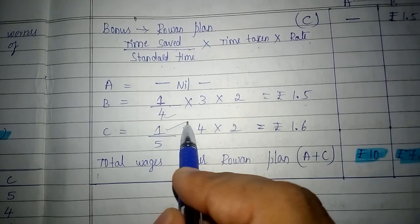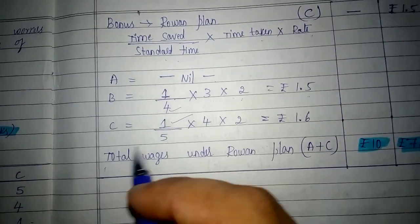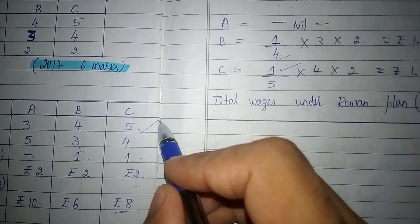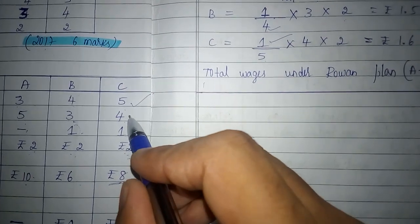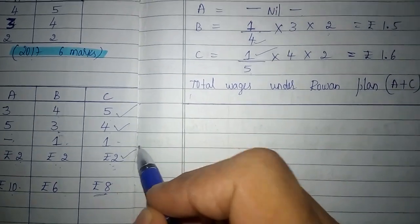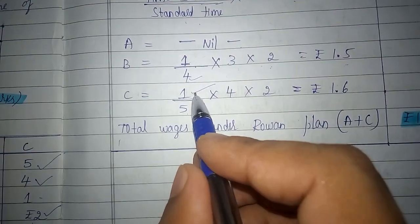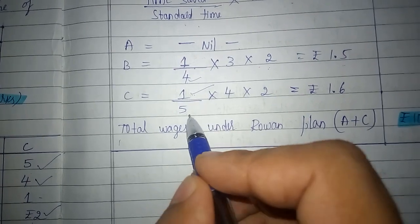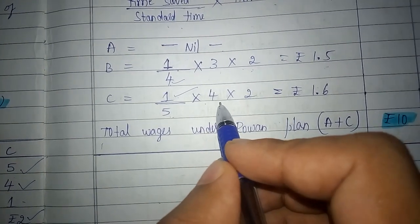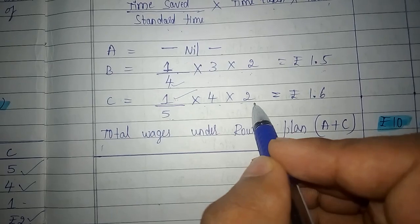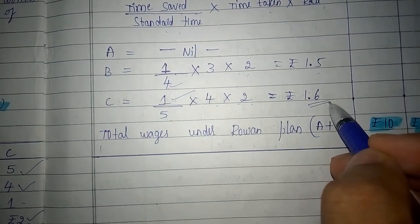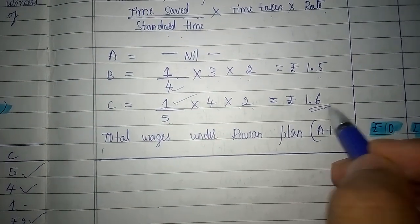In the case of C, he has saved 1 hour, standard time given was 5 hours, time taken was 4 hours, and rate per hour is 2 rupees. So 1 divided by 5 (standard time), into time taken of 4 hours, into rate per hour of 2 rupees — bonus will be 1.6 rupees.